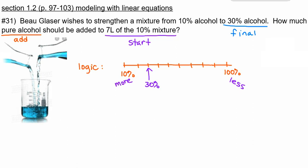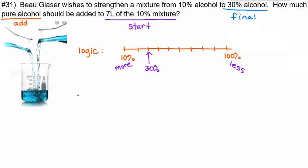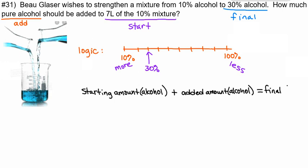Now let's set up the equation. So we're going to take our starting amount of alcohol, not the starting amount of the mixture, but the starting amount of alcohol and add that to the added amount of alcohol. And that should give us the final amount of alcohol in liters.